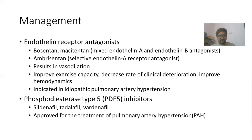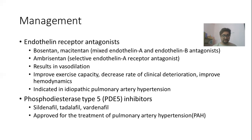Endothelin receptor antagonists are another drug group used in idiopathic pulmonary hypertension. These include bosentan, macitentan, and ambrisentan, all of which antagonize endothelin and cause pulmonary vasodilatation. Phosphodiesterase-5 inhibitors like sildenafil, tadalafil, and vardenafil are also approved for the treatment of pulmonary arterial hypertension and enhance nitric oxide-mediated vasodilatation. These vasodilator drugs are used for idiopathic causes of pulmonary hypertension or select cases only, not for COPD or chronic bronchitis.